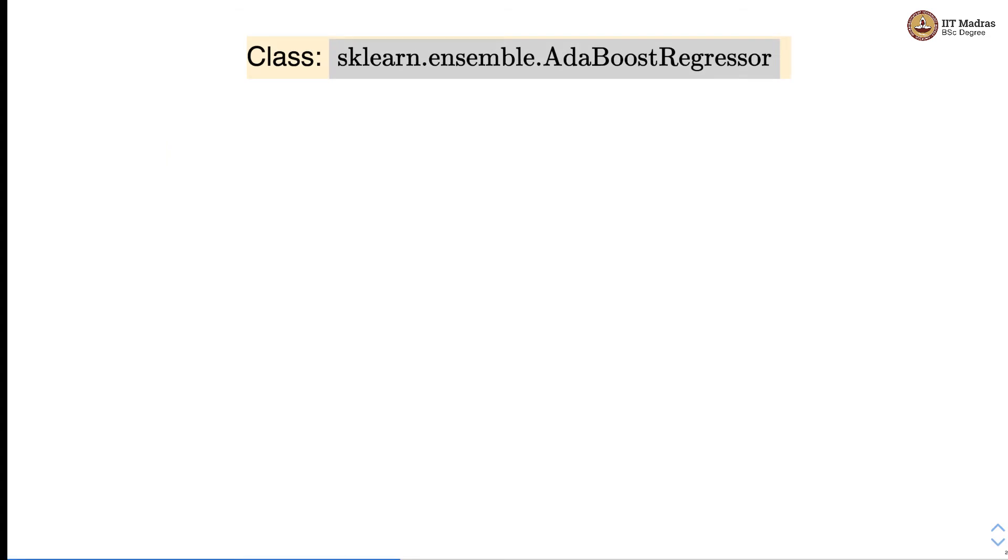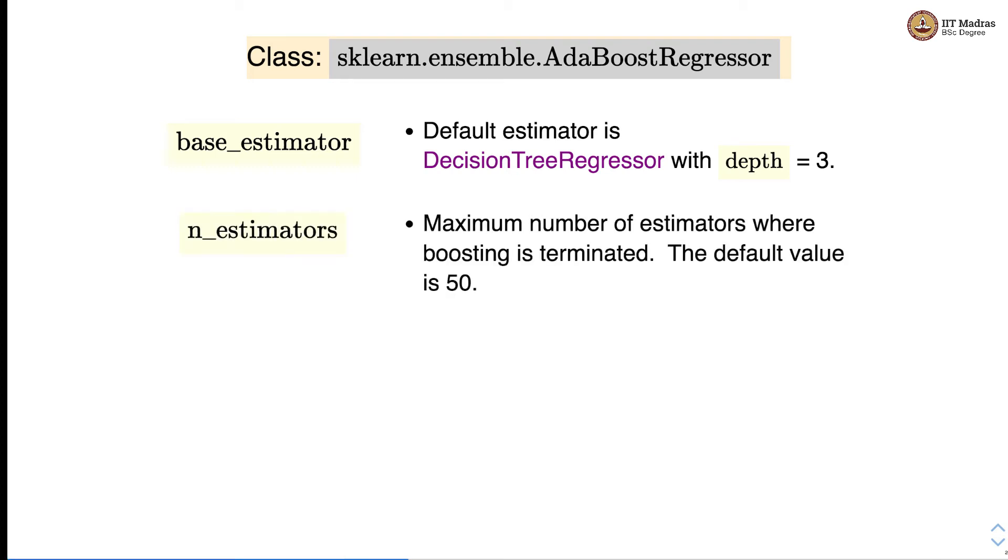Let's look at AdaBoost regressor. It also has a base estimator and the default base estimator is decision tree regressor with depth equal to 3. Number of estimators are set to default value of 50 and they specify the maximum number of estimators where boosting will be terminated.